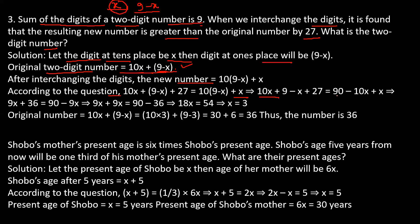Solving the equation, the value of x is 3. The original number is 10x plus (9 minus x) equals 10 into 3 plus 9 minus 3, so 30 plus 6 equals 36. Thus the number is 36. The sum of digits is 3 plus 6 equals 9.